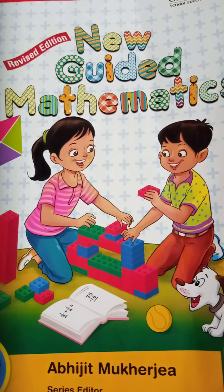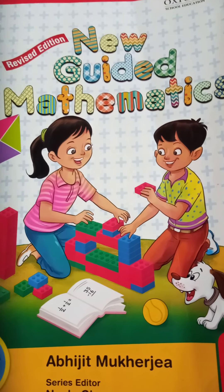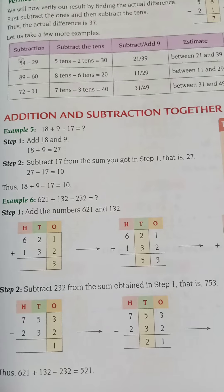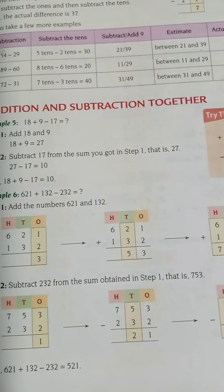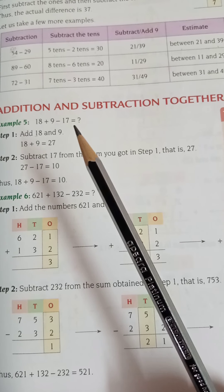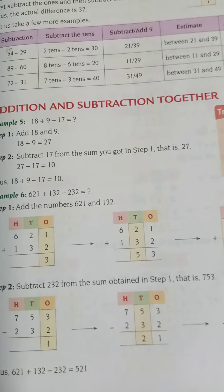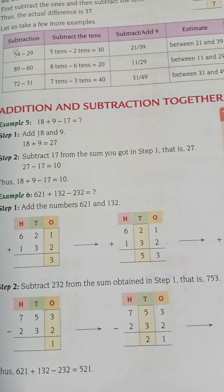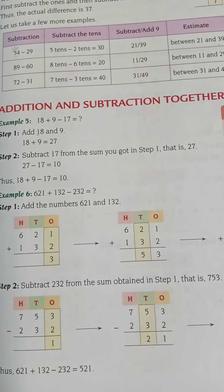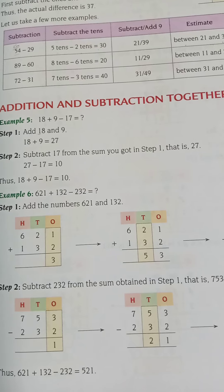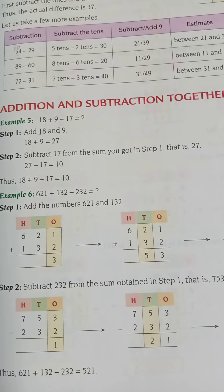Let us look at the first example. Take your new guided mathematics textbook — that is the Oxford textbook — and open page number 45. Here you can see addition and subtraction together. Moving to the first example: it is 18 plus 9 minus 17. The first step is to add 18 plus 9 to get the sum, which is 27. Step 2 is to subtract 17 from 27. So the answer is 10.